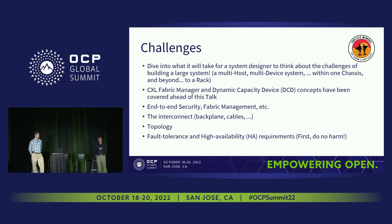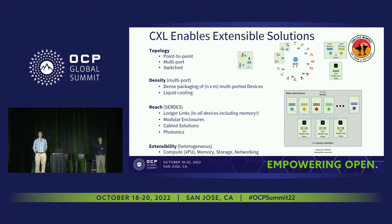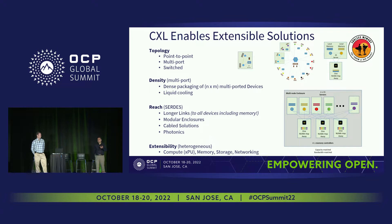CXL provides a number of capabilities that we can choose to take advantage of or not. Devices can be connected directly to a CPU — that's a point-to-point connection. A memory expander or an accelerator is a good example to be directly connected to the CPU. The CPU manages coherence for a memory device so the memory device itself need not worry about it. But CXL also provides multi-headed capabilities and switch capabilities.